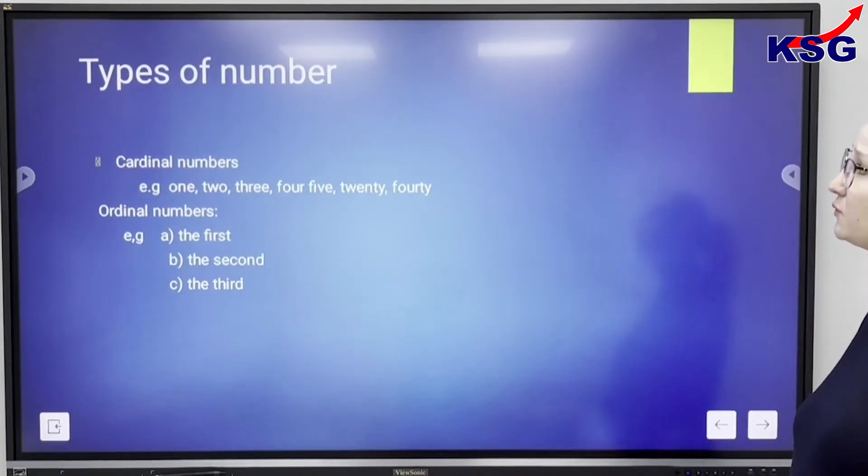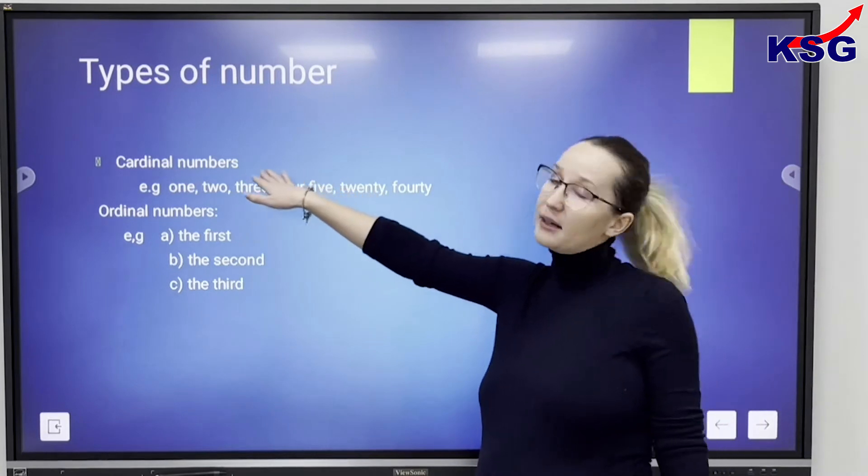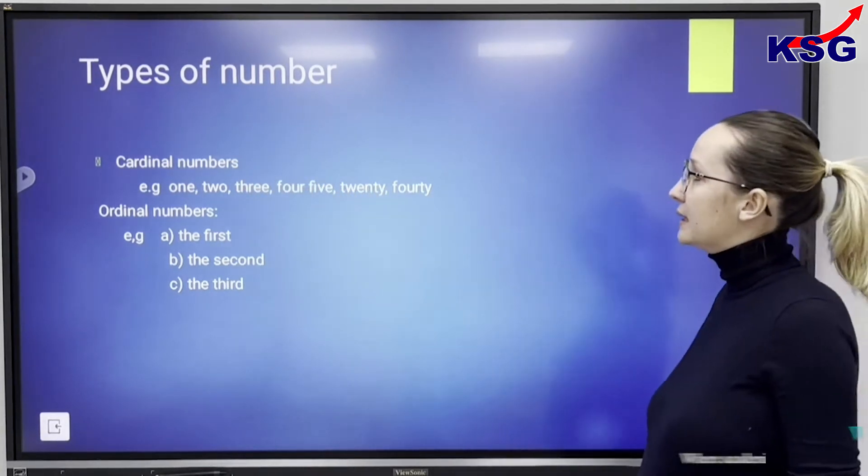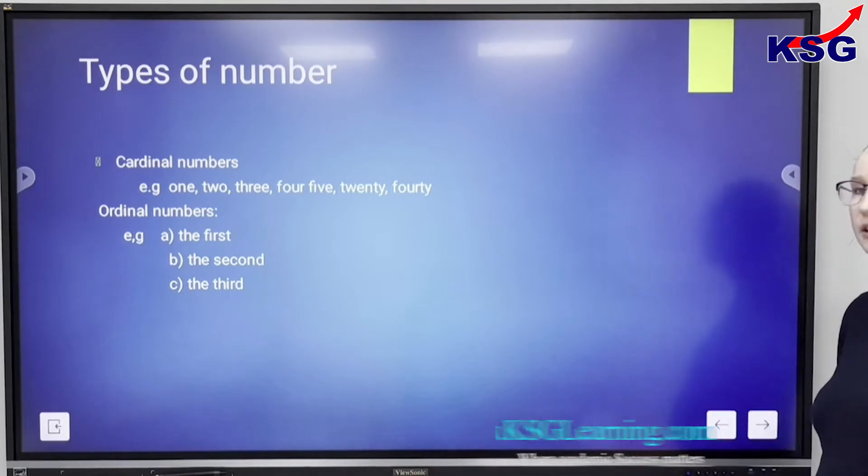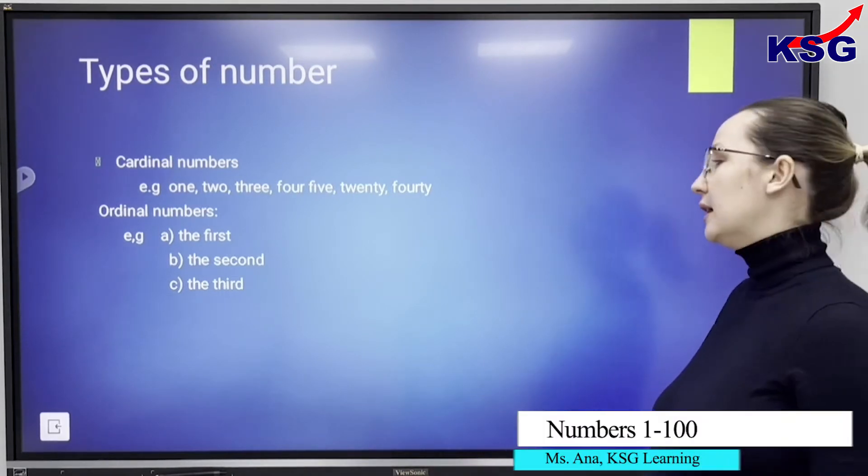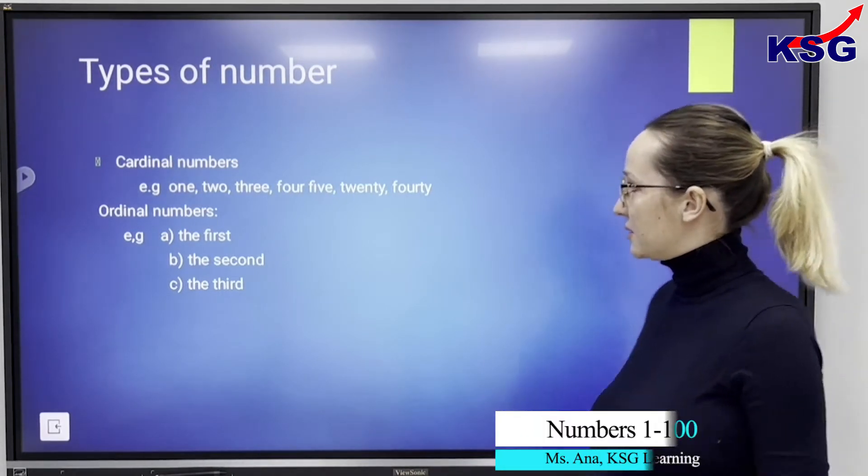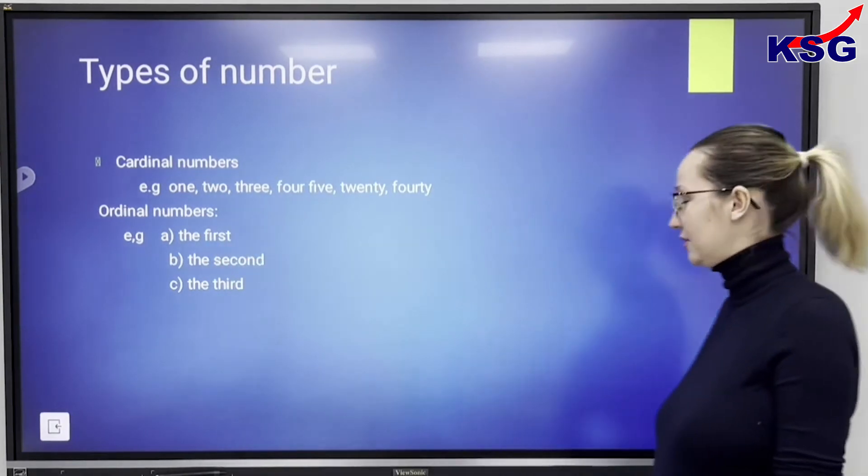There are types of numbers. The first ones are the cardinal numbers and examples are 1, 2, 3, 4, 5, 20, 40, 50 and so on. And then are the ordinal numbers when we say the 1st, the 2nd and the 3rd.